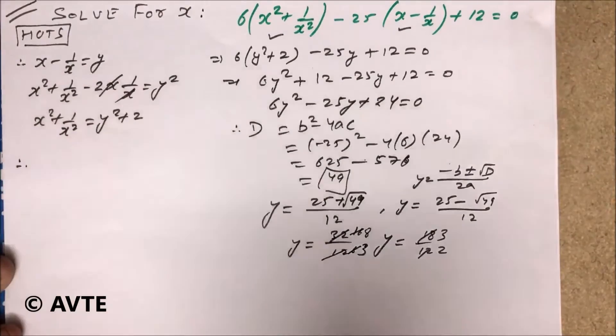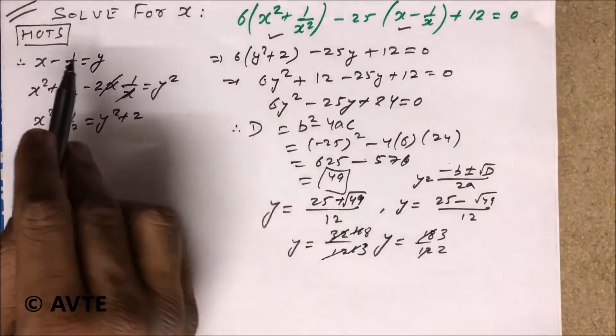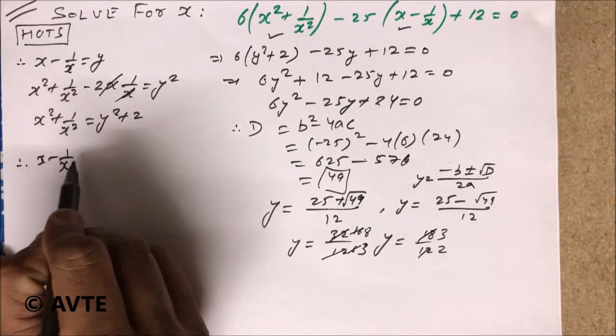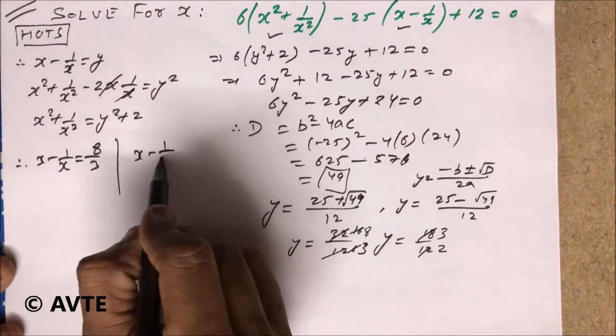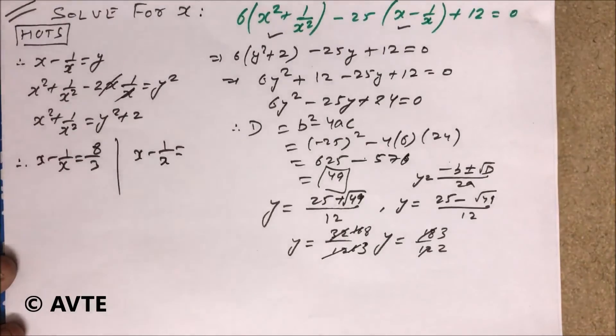Now you know that this value of y is x minus 1 by x is equal to 8 by 3 and x minus 1 by x is equal to 3 by 2.